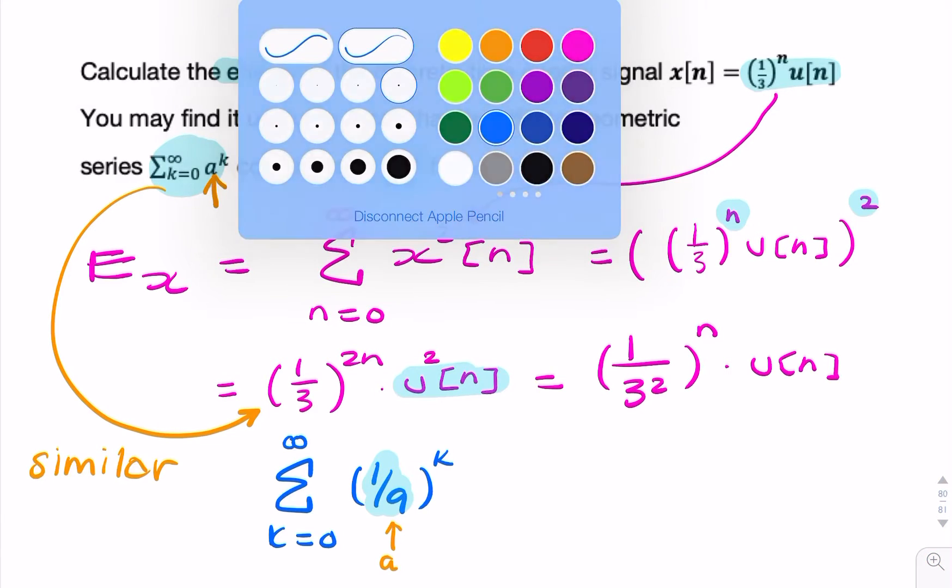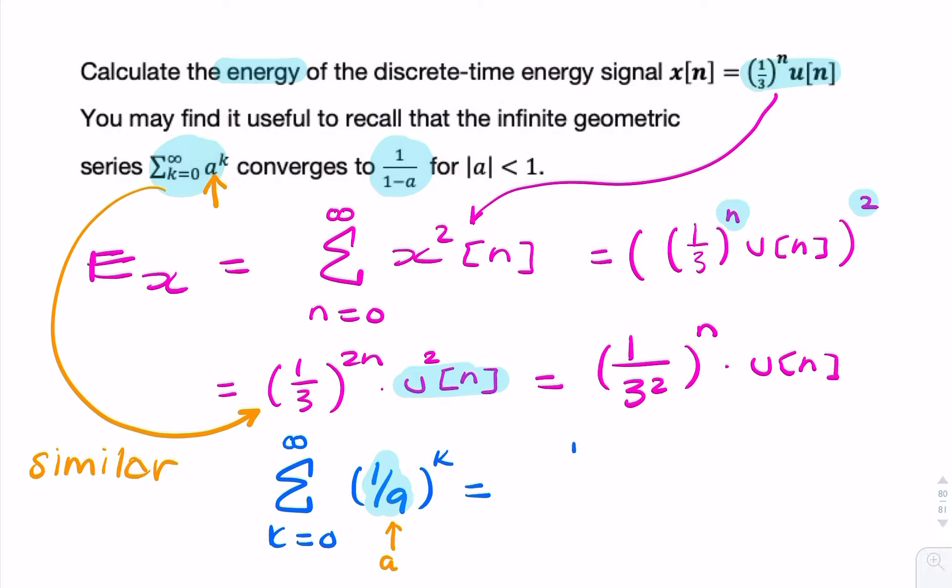So that will converge to 1 over 1 minus 1 over 9. We could simplify that or we could leave it. You could say it's 9 over 8, and that would be your final answer. Thank you.